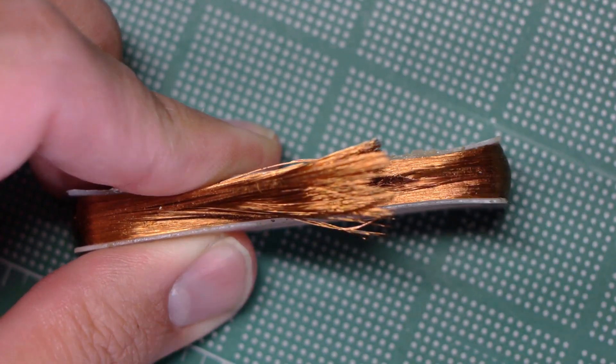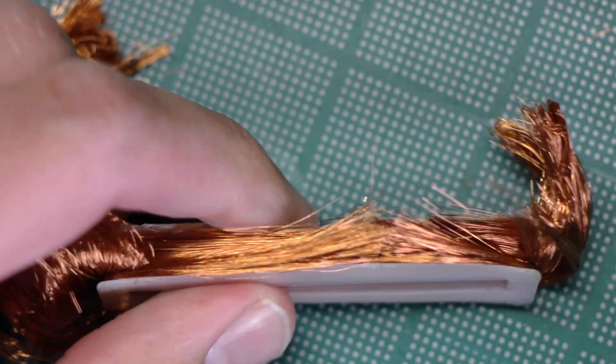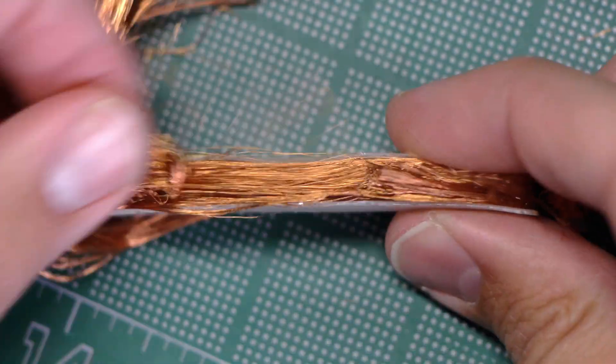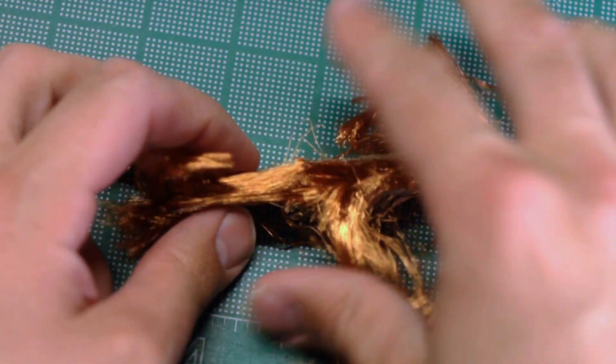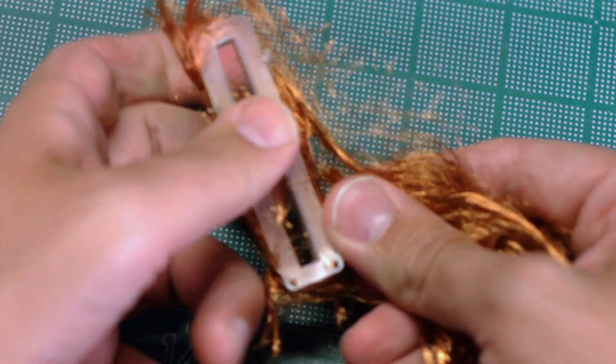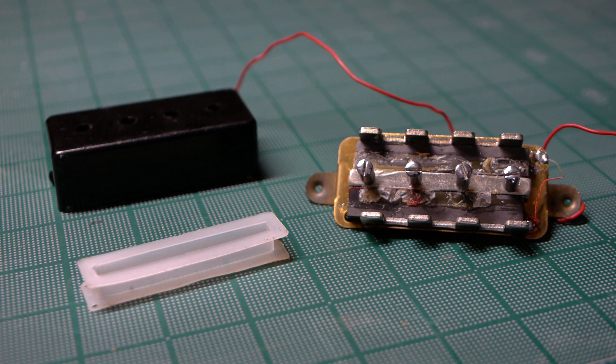Tearing the coil down with a small pair of diagonal cutters and an exacto knife with a number 11 blade, I noticed something else interesting. The wire is completely un-potted. There isn't a trace of wax anywhere on the outside or inside of the coil. It's safe to assume the neck pickup is also un-potted, so now I know that this pickup is not going into the wax bath.